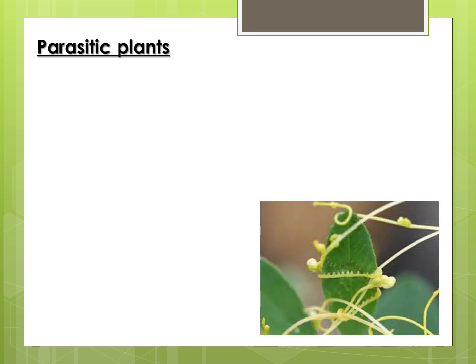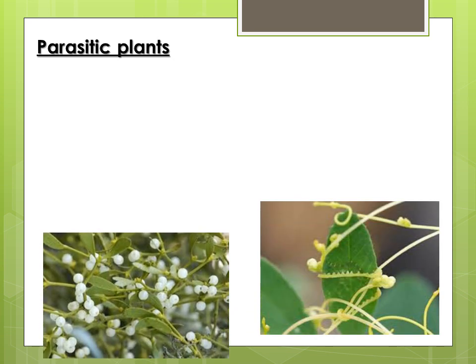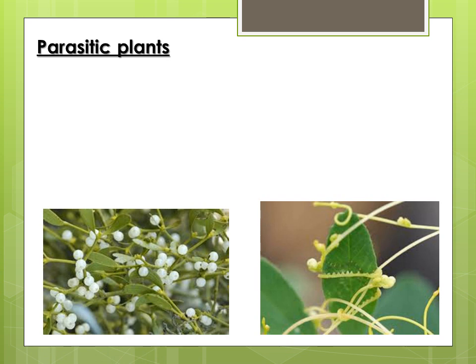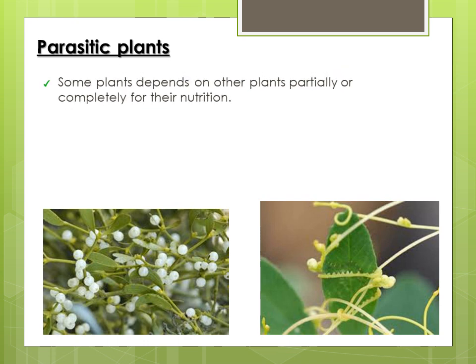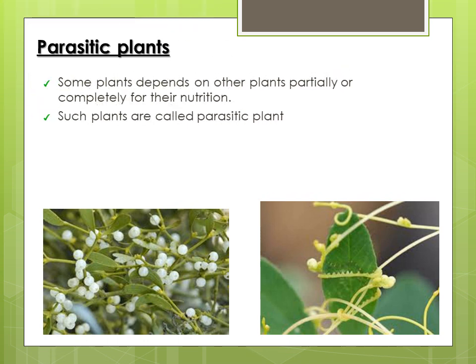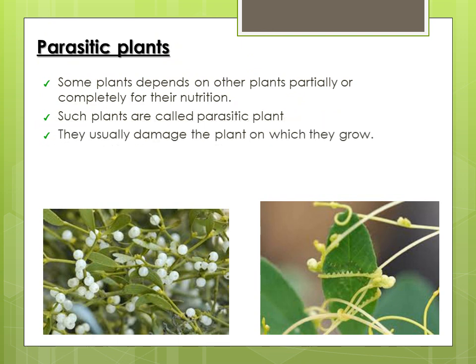Now let us learn about parasitic plants. Some plants depend on other plants partially or completely for their nutrition. Such plants are called parasitic plants and they usually damage the plant on which they grow. For example, cuscuta and mistletoe.